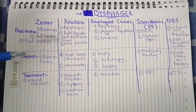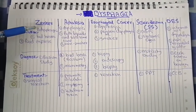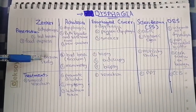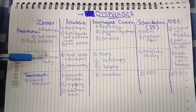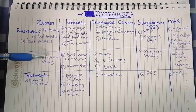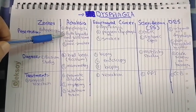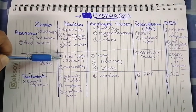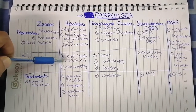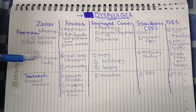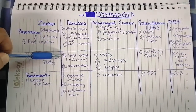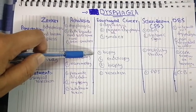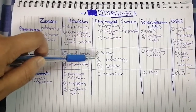Moving on to diagnosis: for Zenker's diverticulum, you do a barium study and will clearly see a posterior pouch in the cricopharyngeal muscle. For achalasia, there is a classic bird-beak sign on barium swallow, and for confirmation you can do manometry.